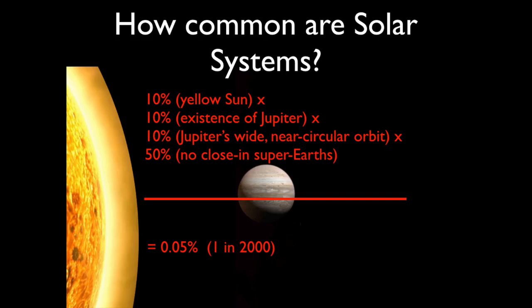Putting all these probabilities together, we can ask: how common are solar systems? Based on what we know, there's a 1 in 10 chance of having a yellow Sun, a 1 in 10 chance of having a Jupiter at all, a 1 in 10 chance of that Jupiter having a wide, nearly circular orbit, and about a 1 in 2 chance of not having a close-in super-Earth. Adding those up, there's about a 1 in 2,000 chance of having a solar system like ours among nearby stars.